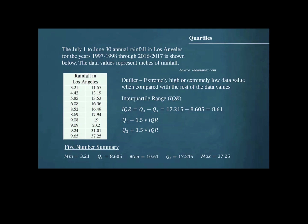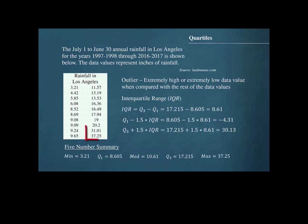Substituting into the first formula, we find the left endpoint of negative 4.31. Substituting into the second formula, we find a right endpoint of 30.13. We can see from the ordered data set that the values 31.01 and 37.25 lie outside of this interval, so we will consider 31.01 and 37.25 inches of rainfall to be the outliers.